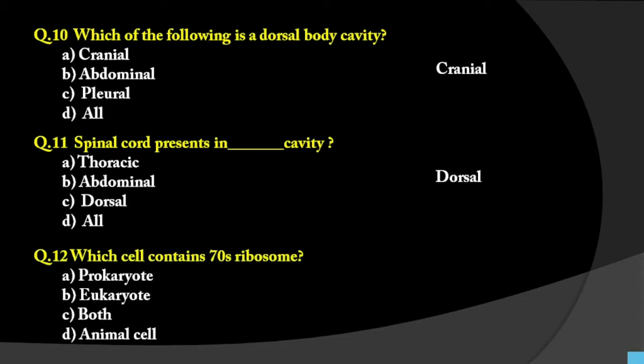Question number 12: Which cell contains 70S ribosomes? Ribosomes are of two types: 70S and 80S. 70S ribosomes are present in prokaryotes. Pro means primitive, karyote relates to the word karyon meaning nucleus. So primitive-type cells have 70S ribosomes, while eukaryotes have 80S ribosomes. Animal cells are part of eukaryotes. Therefore the answer is prokaryote, which contains 70S ribosomes.